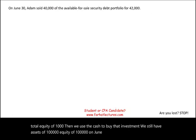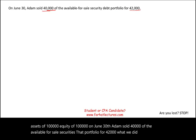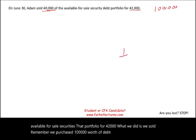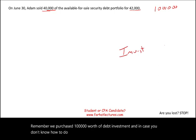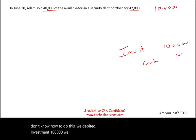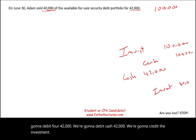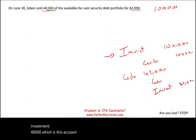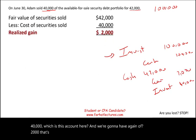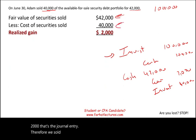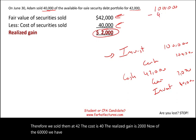On June 30th, Adam sold $40,000 of the available for sale securities debt portfolio for $42,000. We purchased $100,000 worth of debt investment, debiting investment $100,000 and crediting cash $100,000. When we sold $40,000, we debited cash $42,000, credited the investment $40,000, and recorded a gain of $2,000. Therefore, the realized gain is $2,000. We still have $60,000 worth of investment remaining.